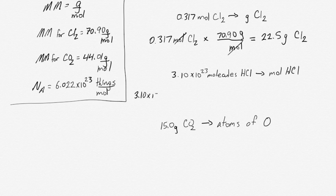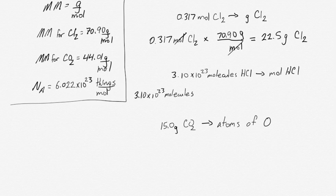We have 3.10 times 10 to the 23 molecules - molecules of HCl, molecules of whatever. We have a certain number of molecules and we want to convert it into moles. So we set up our ratio.